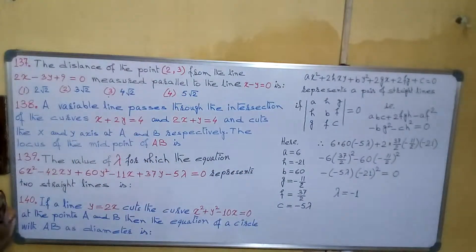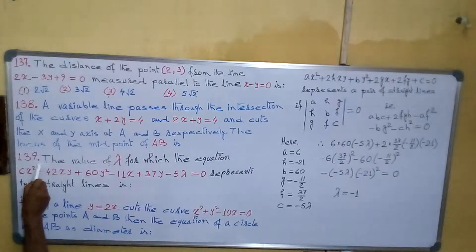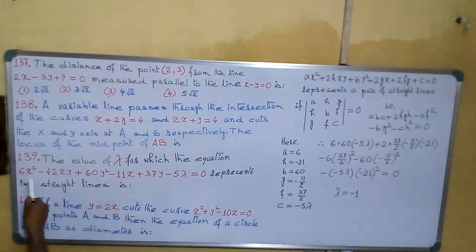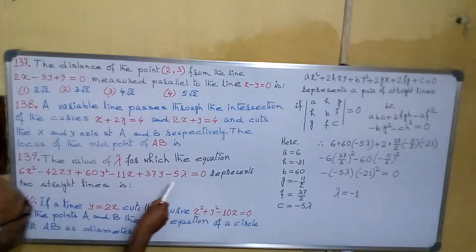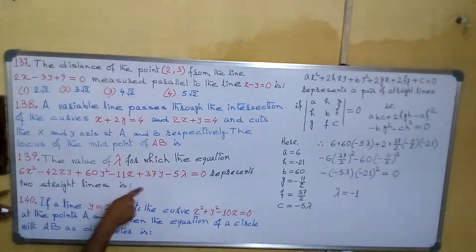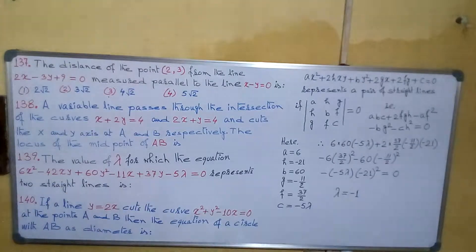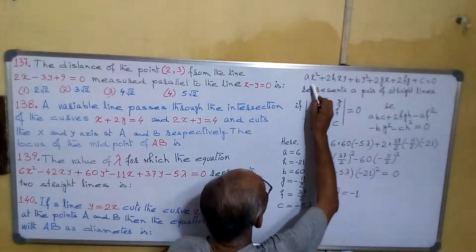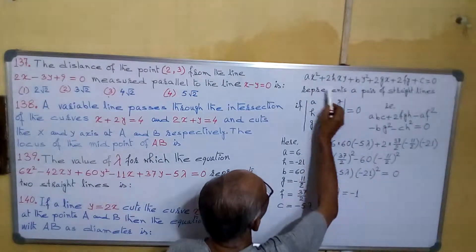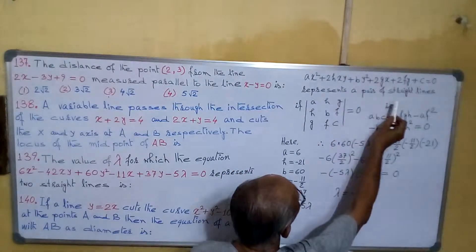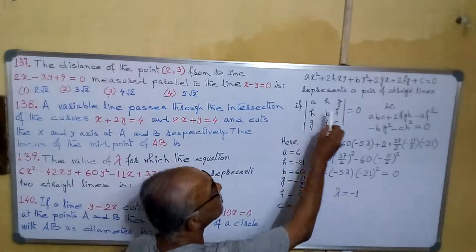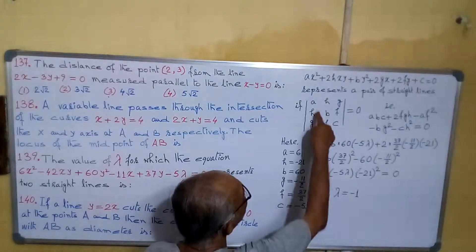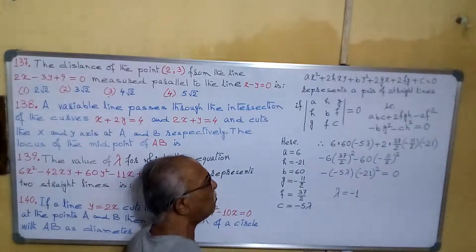See these sums. I will show one by one. Since I have done this one and started this one, the value of lambda for which the equation represents two straight lines. We are knowing that if the equation ax² + 2hxy + by² + 2gx + 2fy + c equals to 0 represents a pair of straight lines, then this determinant value will be 0.